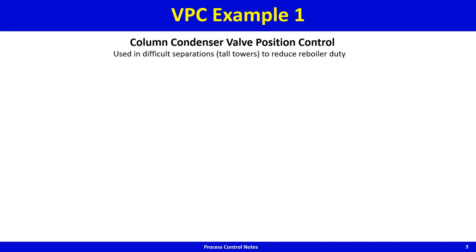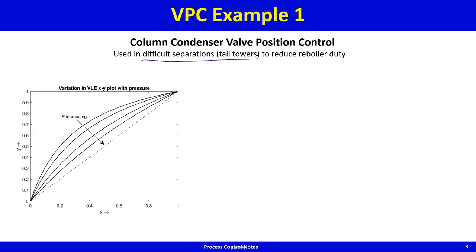The pressure of a distillation column is set by the condenser cooling duty. In difficult separations — that is, tall towers — one would like to operate the column at the lowest possible pressure, because the lower the pressure, the greater the relative volatility. As pressure increases, relative volatility decreases, meaning separation difficulty goes up.